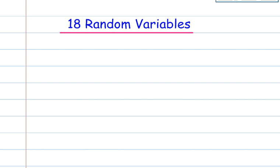IB Chapter 18, Section A and B, Random Variables. Let's start first of all with some key vocabulary.